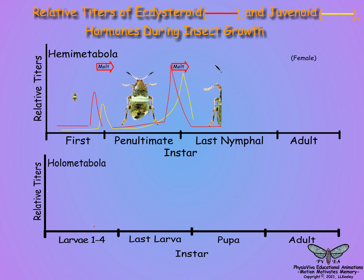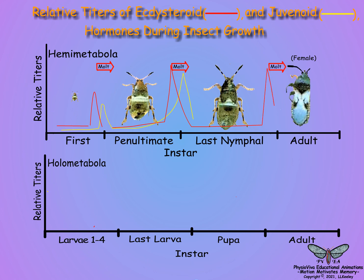If both juvenoids and ecdysteroids are present in the instar prior to molting, the subsequent instar remains a nymph. If juvenoids are absent when ecdysteroids are present, the resulting instar is an adult. Juvenile hormone is produced again for vitellogenesis in egg formation by adult females of most insect species.